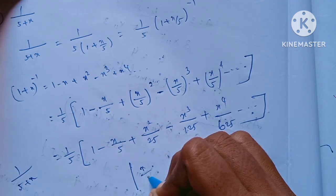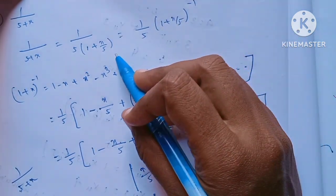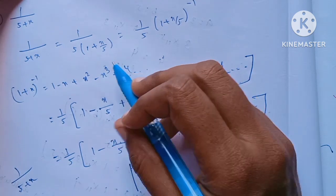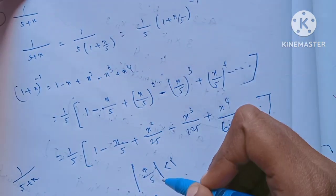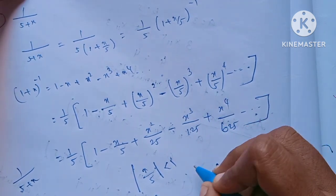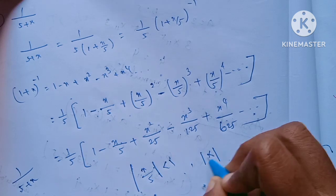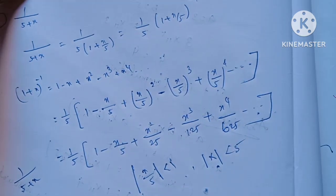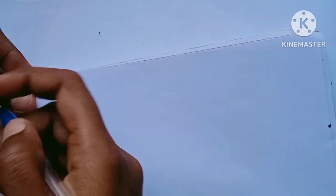For 1/(5+x), we multiply through by 1/5 to get the final expanded answer. This completes the first question.